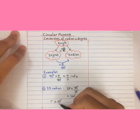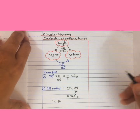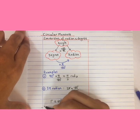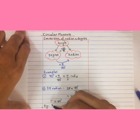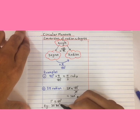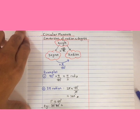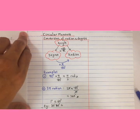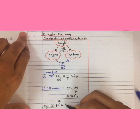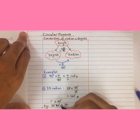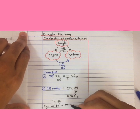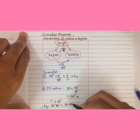1 degree is equivalent to 60 minutes. So sometimes the question gives you an example like 30 degrees and 30 minutes. How are you supposed to convert from minutes to degrees? You simply divide by 60. So you have 30 plus 30 divided by 60, which gives you 0.5, so it gives you 30.5 degrees.